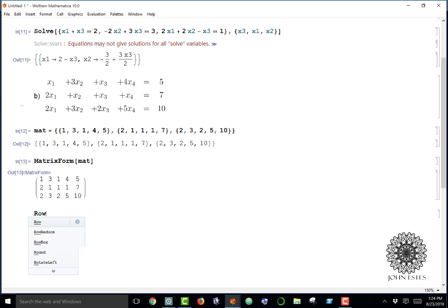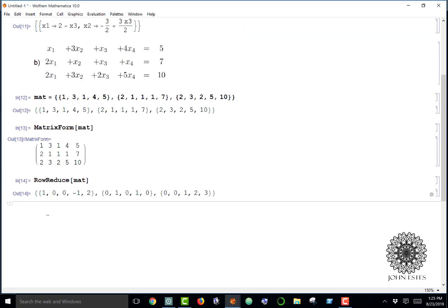Now to actually solve the system of equations, I'm going to use row reduce on mat. That's going to do Gauss-Jordan elimination on this matrix. Here's what I have: 1, 0, 0, -1, 2; 0, 1, 0, 1, 0; and 0, 0, 1, 2, 3.